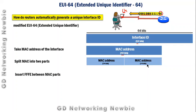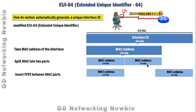So what we do is insert FFFE between these two MAC parts. This four-digit hexadecimal number FFFE is inserted in between the two MAC parts. You can see: first part 24 bits, second part 24 bits, and we inserted 16 bits in between those two parts — now this becomes 64 bits.